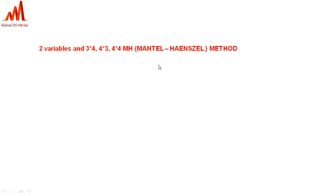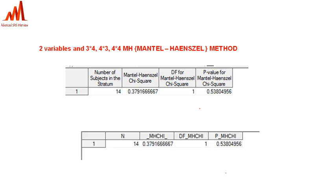For three-by-four, four-by-three, or four-by-four responses — where the first variable has three or four types of responses and the second variable has four or three types of responses — we use the Mantel-Haenszel method. The procedure code is similar to Fisher exact, but the variable we pick is P_MHCHI, which is the correct variable to populate our p-value in the output when using the Mantel-Haenszel method.